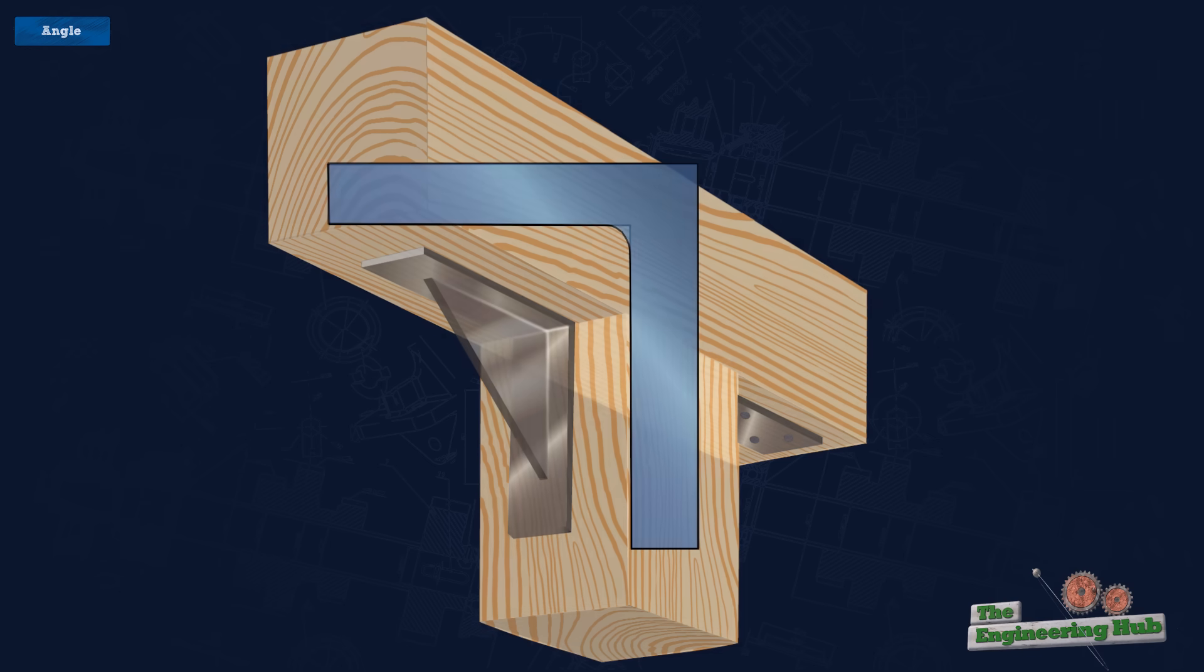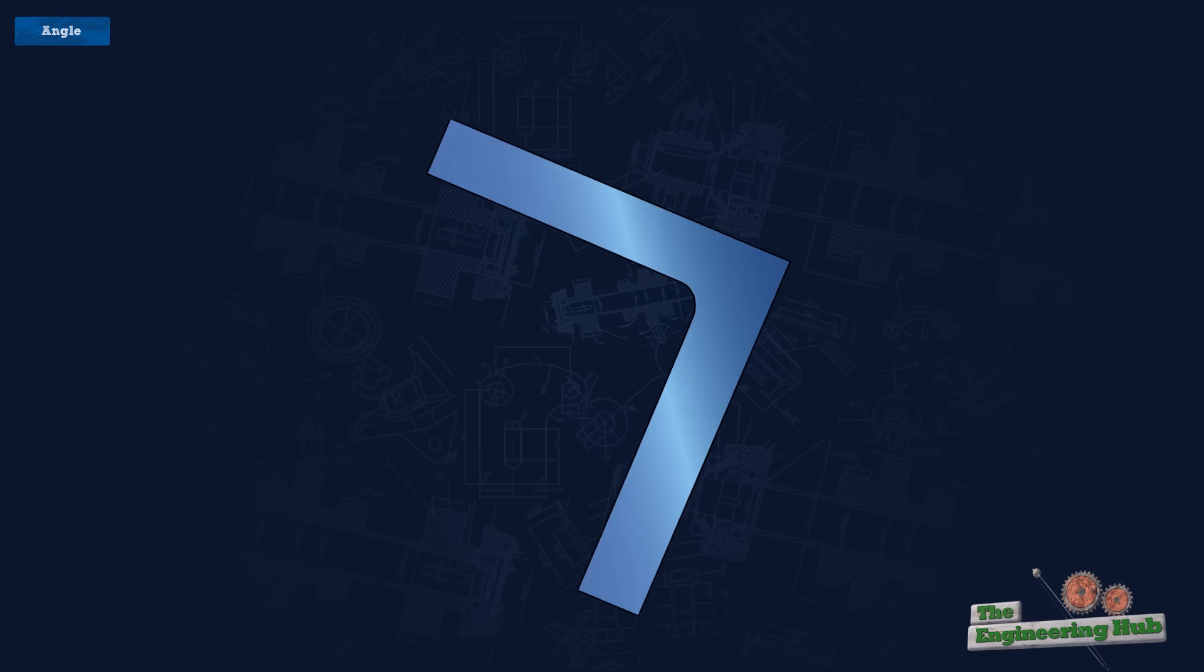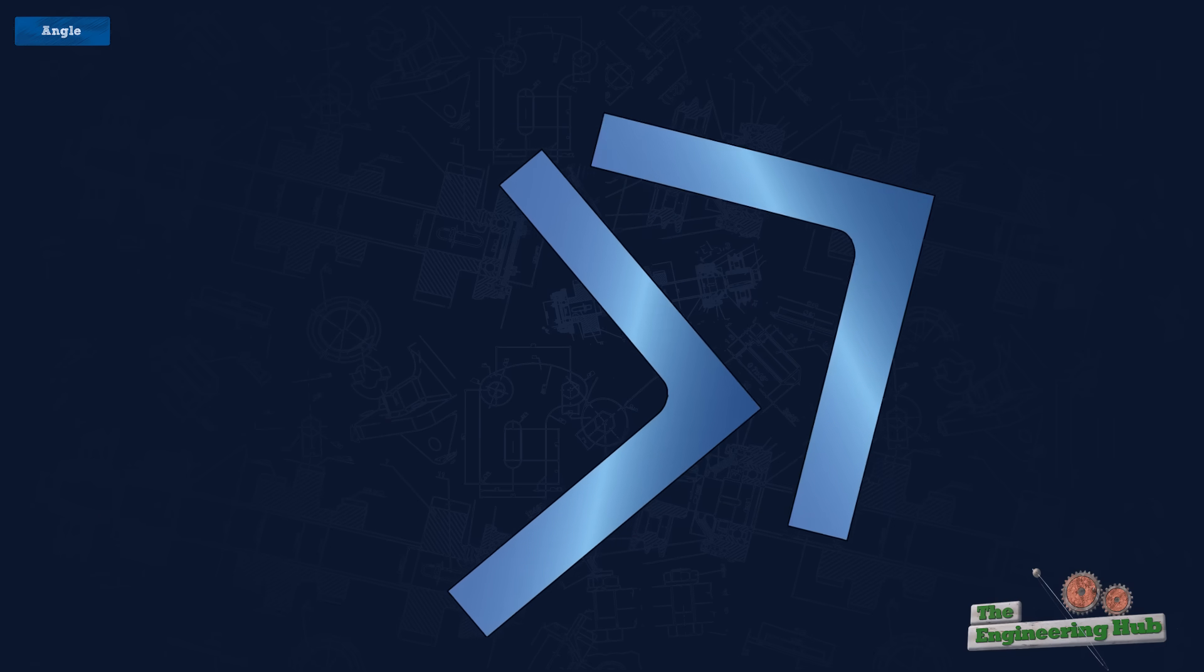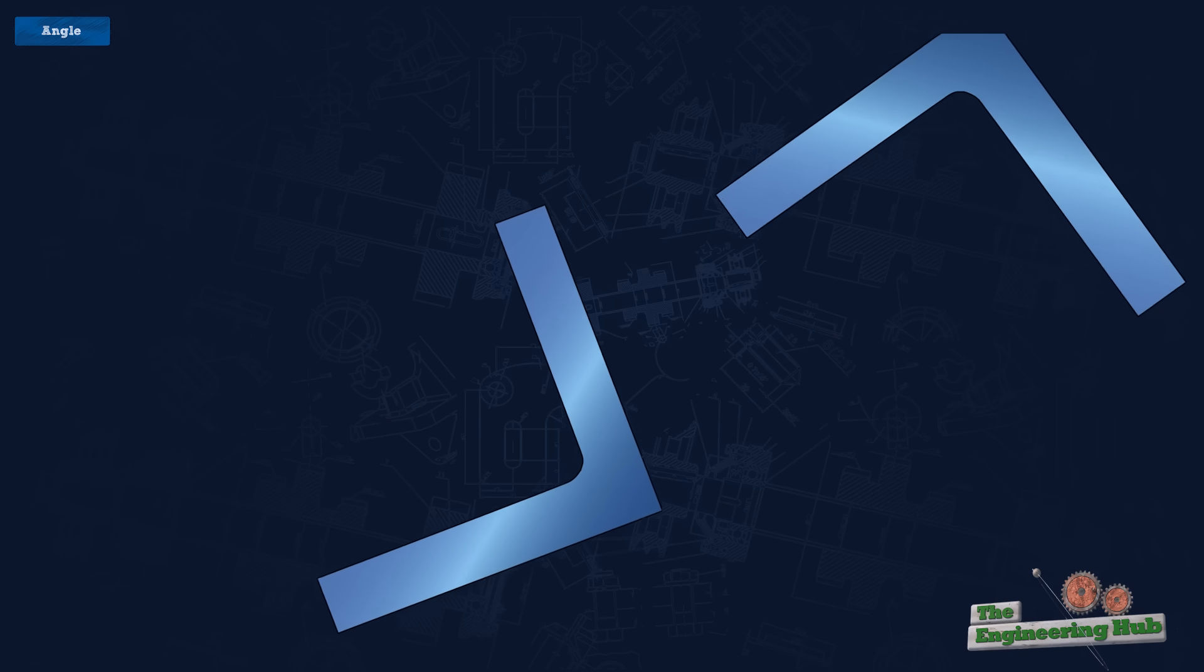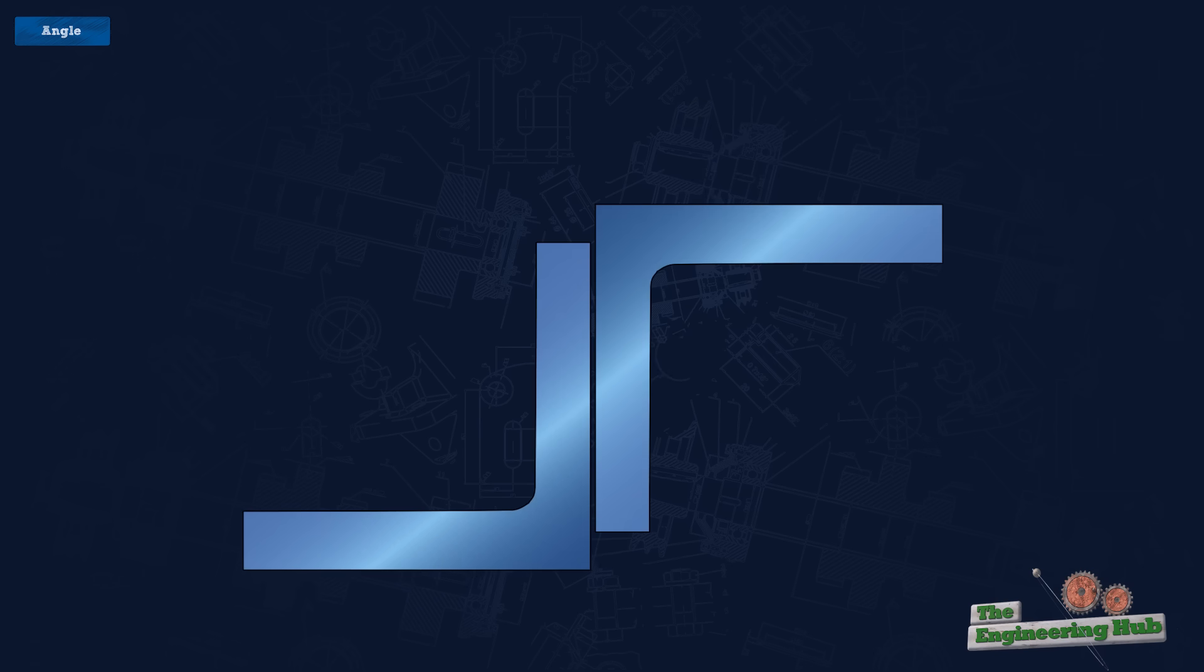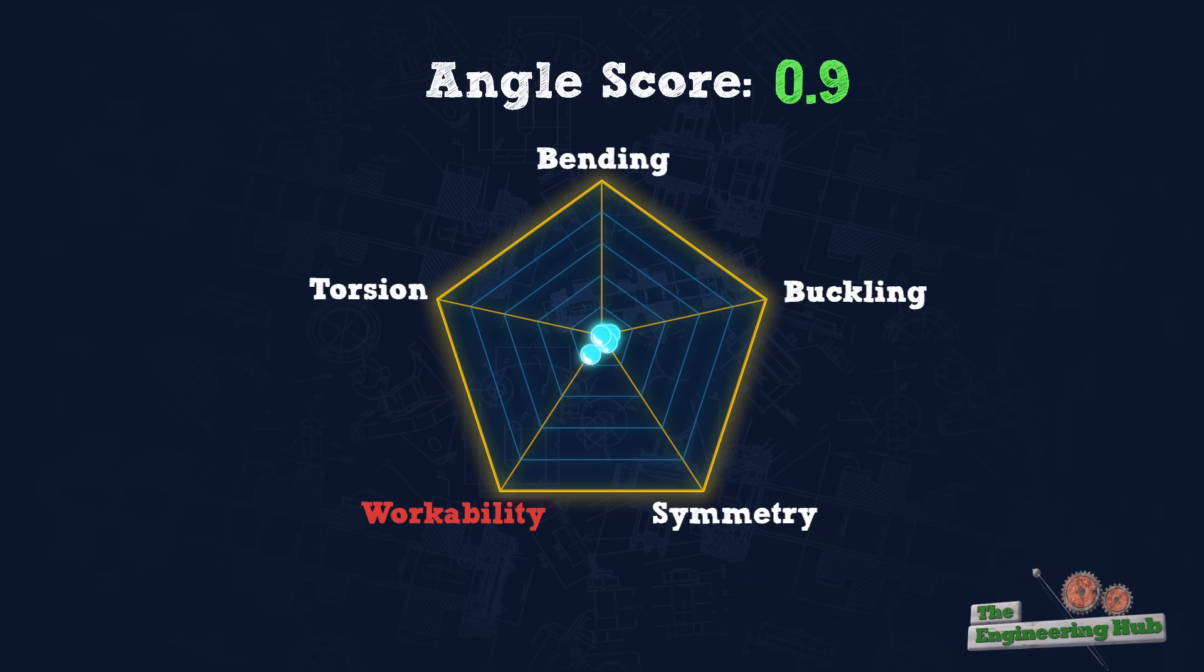Although angles technically have one axis of symmetry, this axis is diagonal and it's generally not practical to span an angle this way, so angles effectively have no useful axis of symmetry. Sometimes angles are doubled up or butted together to form Zs or Ts, which gives them additional versatility and workability points. The angle section's score is almost completely from workability. Angles are very useful for connections, but not great at spanning like other sections.